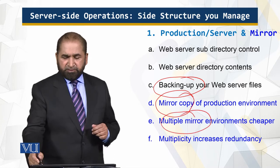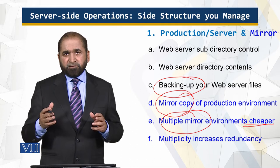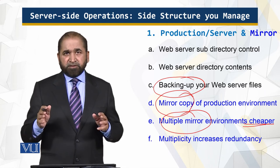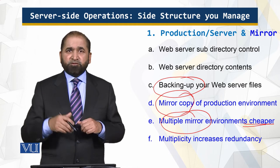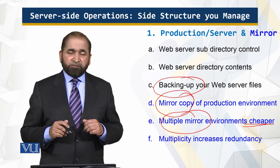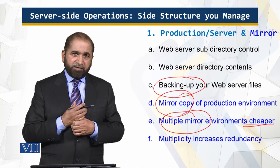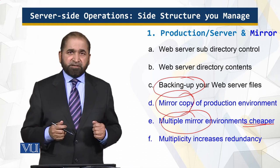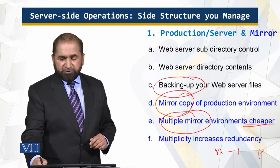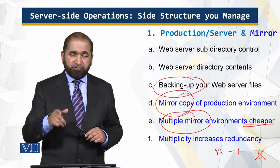Multiple mirror environments are cheaper because instead of getting one powerful and very expensive server, it is much cheaper and economical to have multiple cheaper servers and leverage their combined performance. Multiplicity also increases redundancy — when you have your website mirrored across n servers, if one server fails you have n minus 1 servers still working. If there is only one server and that fails, everything is gone. This is what you call graceful degradation, and that is the benefit of mirroring your website.